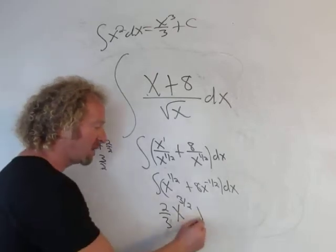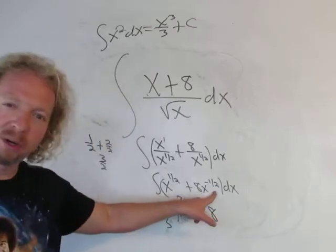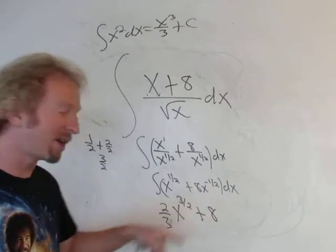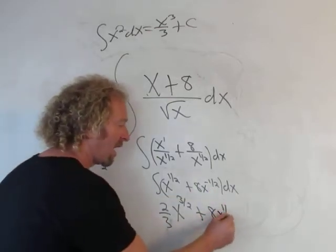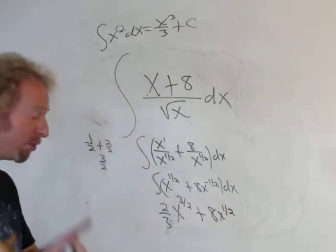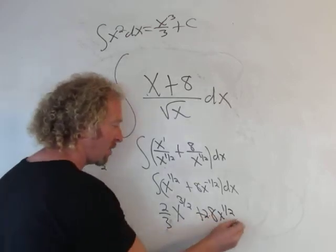Plus 8. Here you want to add one again, so negative 1/2 plus 1 is 1/2. And then when we divide by 1/2, we really multiply by 2, so 2. And don't forget the plus c.